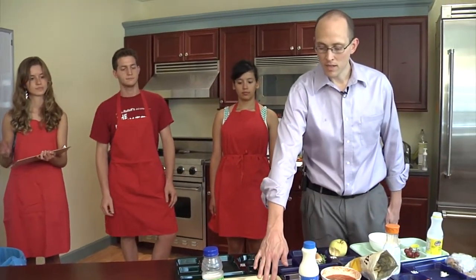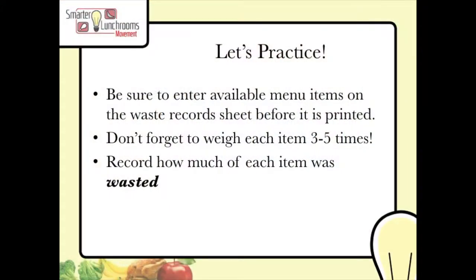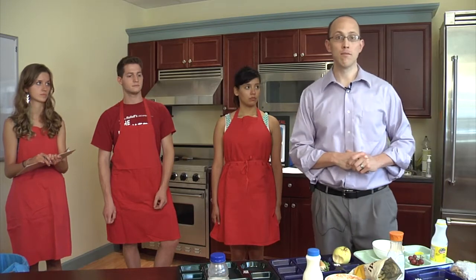They both agreed that all of the celery was left — that was a full serving. They both agreed that about half of the entree, which is stir fry in this case, was left on the tray. But they didn't agree on how much apple juice was left. One estimator thought about half, and the other thought about one quarter was left. In that case, we take an average of those two estimates — we enter both on the recording sheet and make a note to average them in the data.